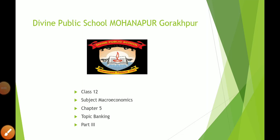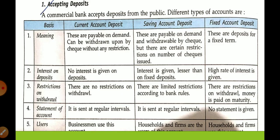Hello, Class 12 students. Today I'm going to start Chapter 5, topic is Banking, Part 3, from your book Macroeconomics. In the previous video I told you about advancing loans. Any financial institution that accepts deposits and advances loans is considered a commercial bank. We had learned about advancing loans; the next very important function is accepting deposits.